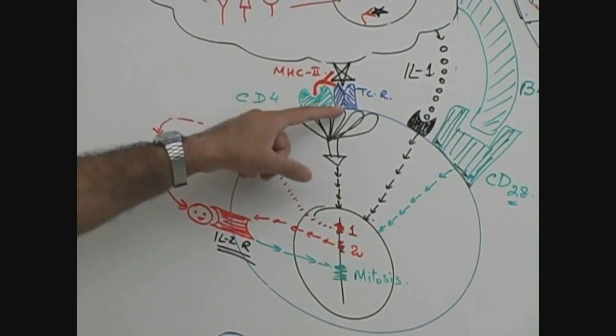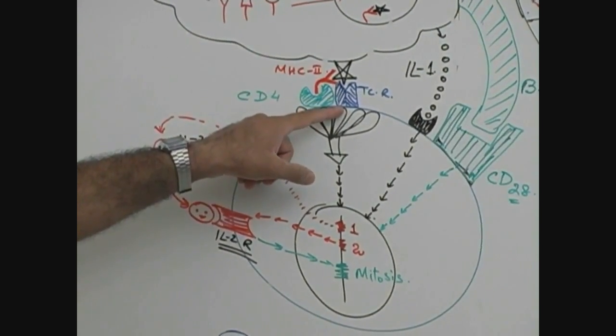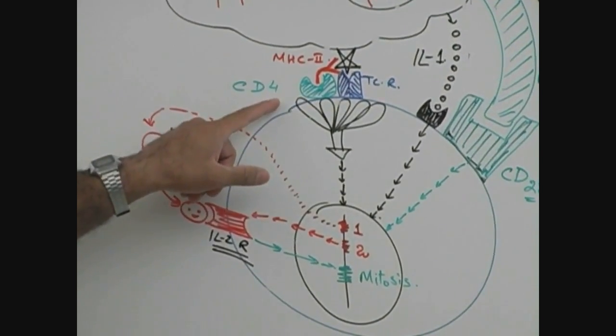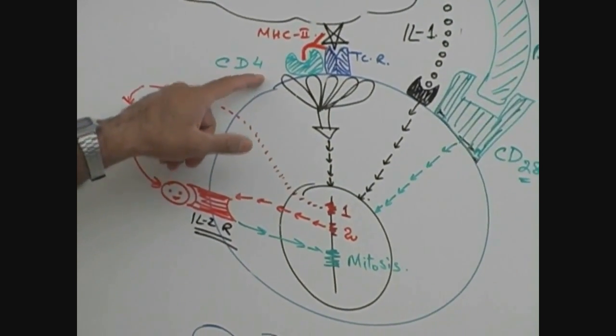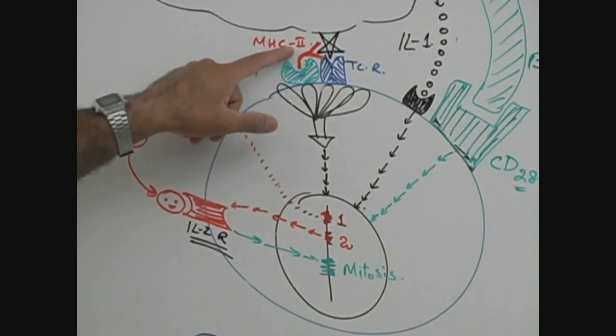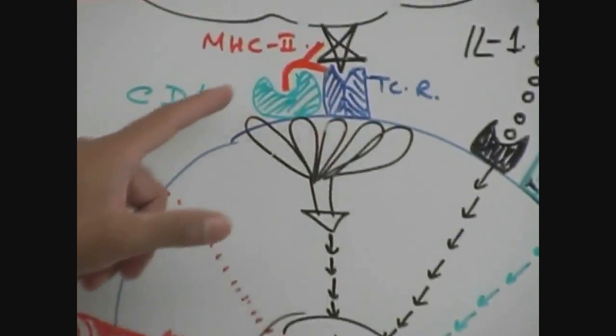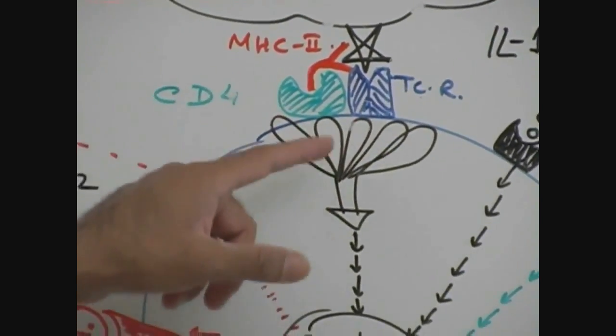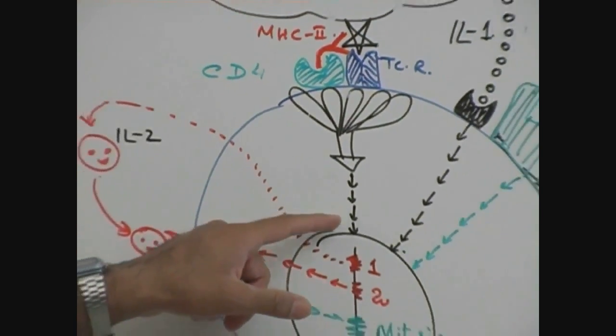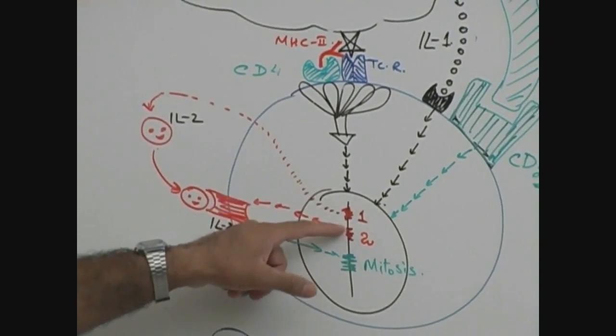As soon as the antigen is recognized by the TCR, then CD4 molecules of the T cells confirm the presence of class 2 molecule. Once TCR and CD4 both are properly occupied, through the CD3 signaling system and multi-molecular pathway, they give signals to the nucleus.